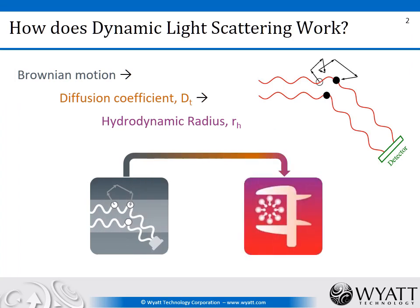Dynamic light scattering is a technique for measuring size of particles in solution or in suspension. It's appropriate for sizes from less than a nanometer and up to several microns. It measures size by utilizing the Brownian motion of the particles in solution. Depending on their size, they will diffuse at different rates. By measuring the diffusion coefficient Dt using light scattering, we can convert that to a hydrodynamic radius Rh, which is a measurement of size.